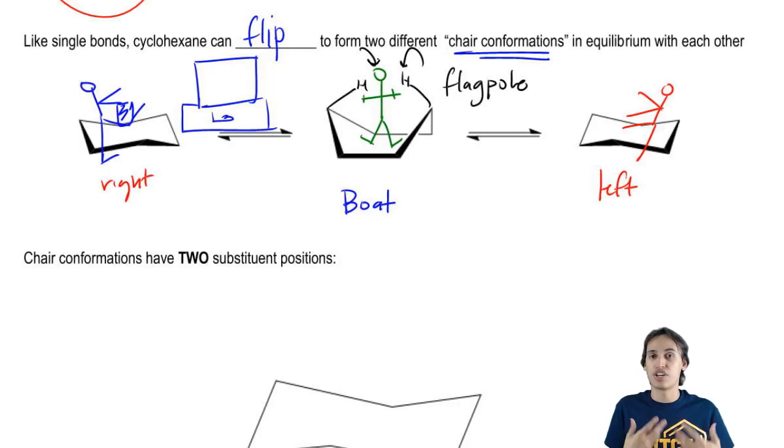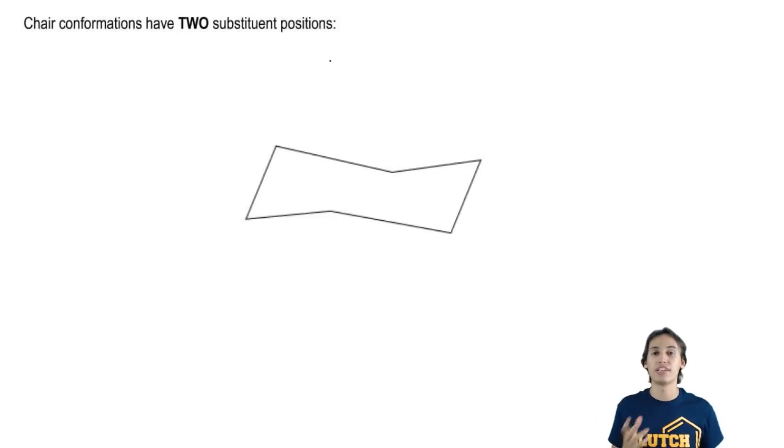In order to understand chair conformations, we have to understand that there's two different types of positions that chairs have. So I want to just go ahead and draw these out and hopefully this will make sense to you.